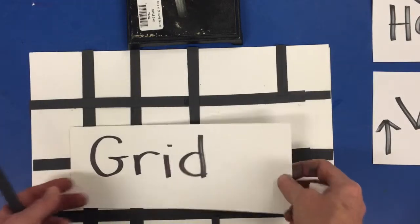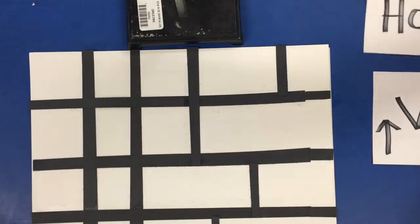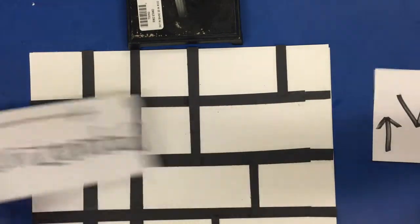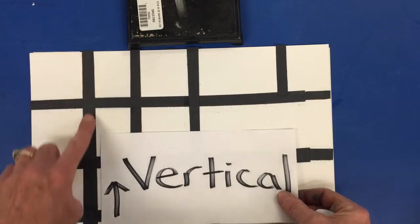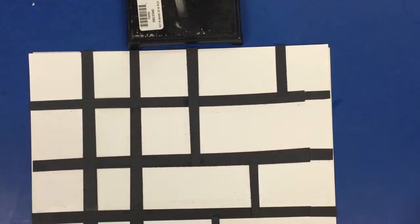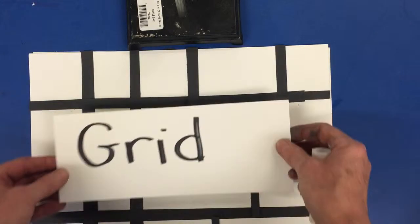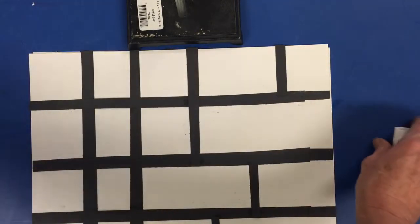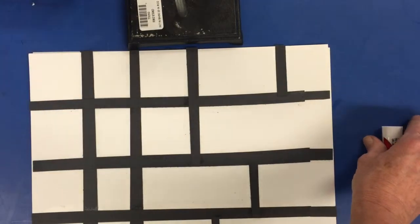So here I have my grid design using horizontal black lines and vertical black lines of construction paper. Now I'm ready to fill in my grid with my colored paper. I'm using the three primary colors.